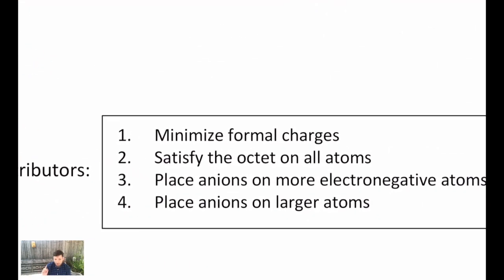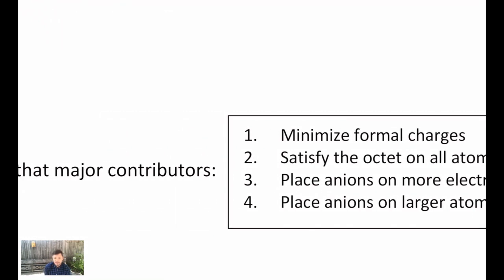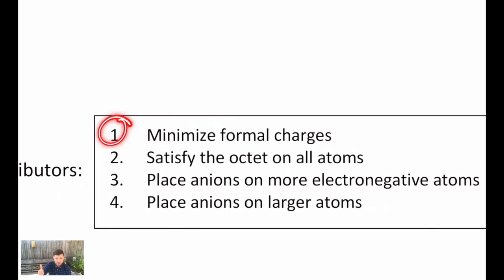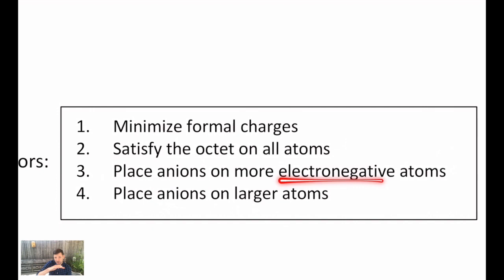Let's look back at all the pairs we've drawn and figure out what the major contributor is. Sometimes the contributors aren't all equivalent in terms of which one looks most like the actual structure. There are three things to keep track of: number one, minimize the charges — a structure with no charges is way better than one with charges; number two, satisfy the octet on all atoms; and three, if you have an anion, it's either going to be on the more electronegative atom if you're comparing the same row of elements, or on the larger atom if you're comparing elements up and down a column.